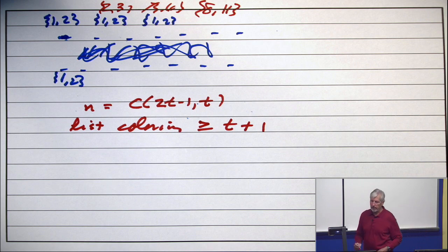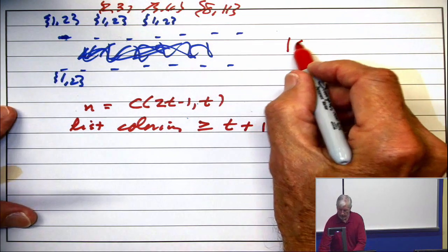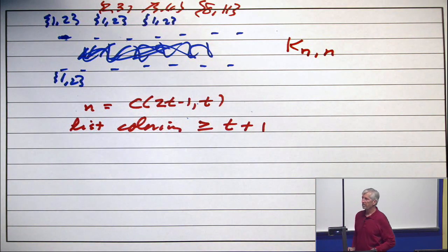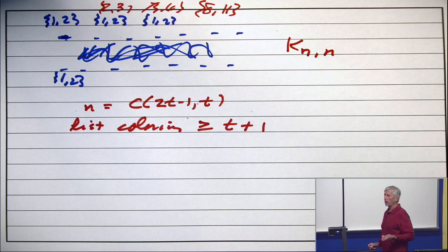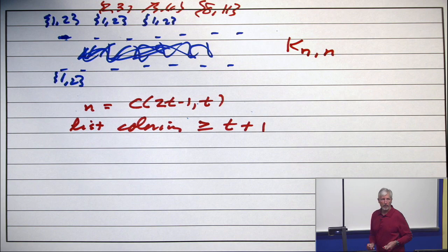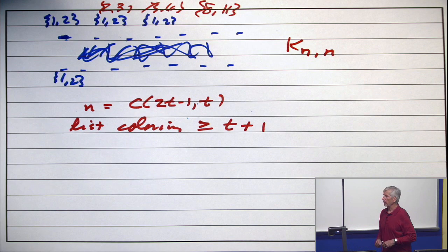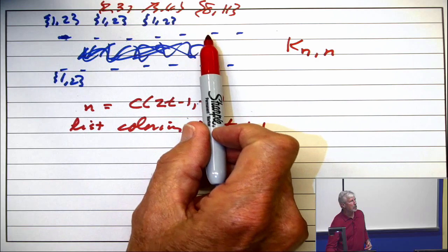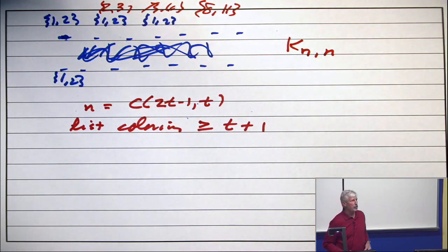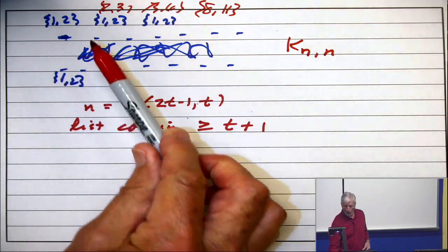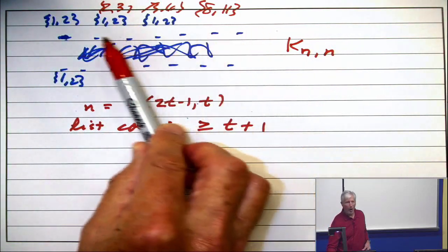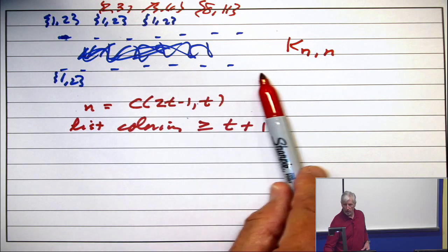So I'm going to take the complete bipartite graph, K_{n,n}. But n, the number of vertices on each side, is going to be the binomial coefficient, C(2t minus 1, choose t). Now, I claim you cannot color that from lists if on every vertex you put one of the subsets of size t. So all the subsets are different, but they're all there. On this side, and on this side.